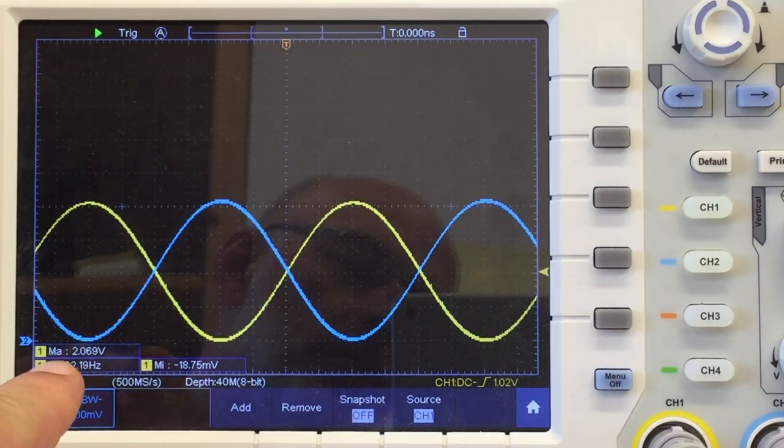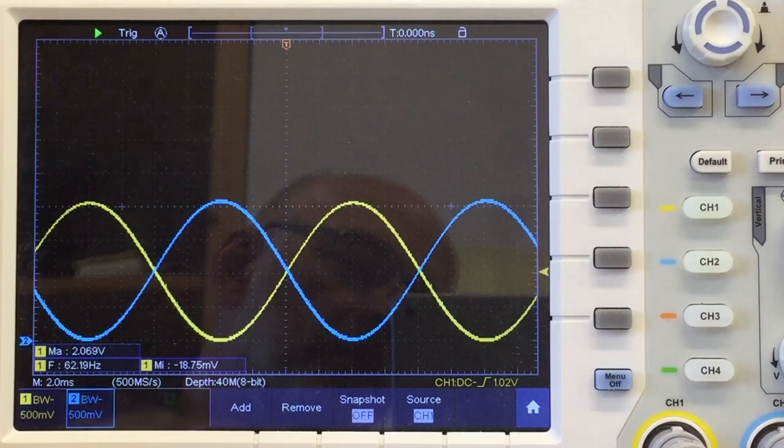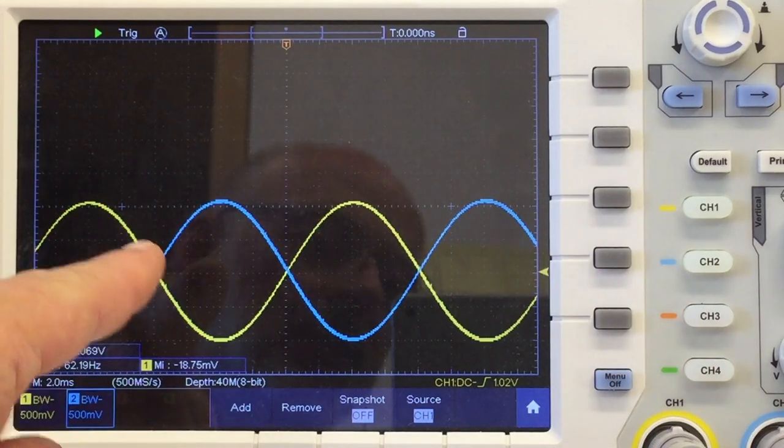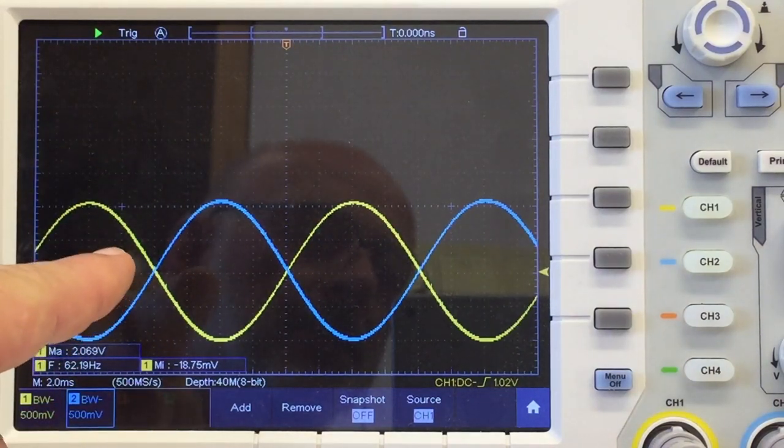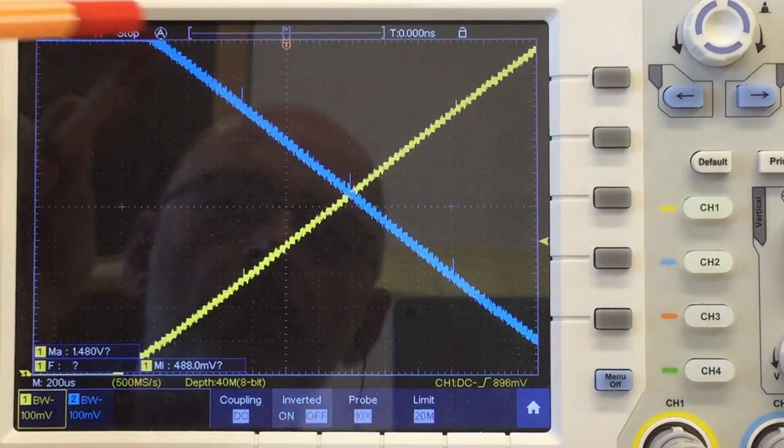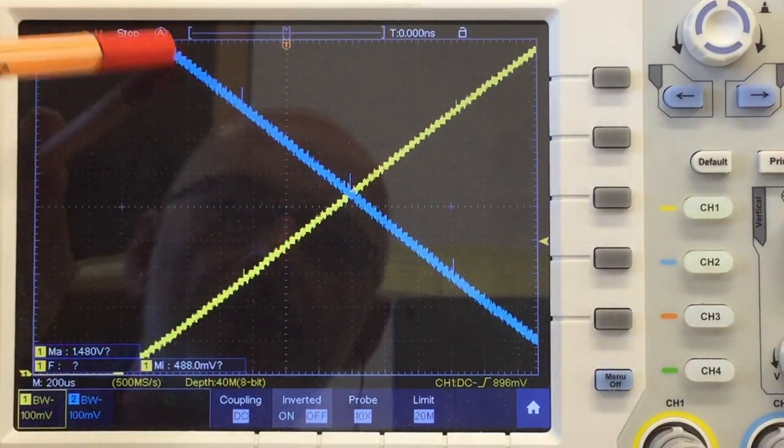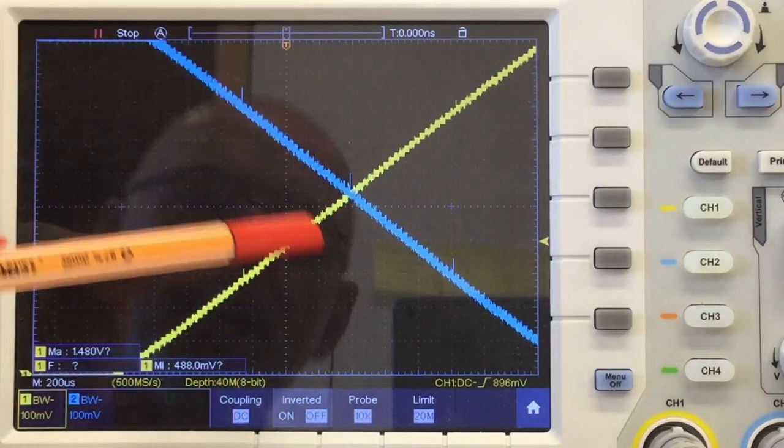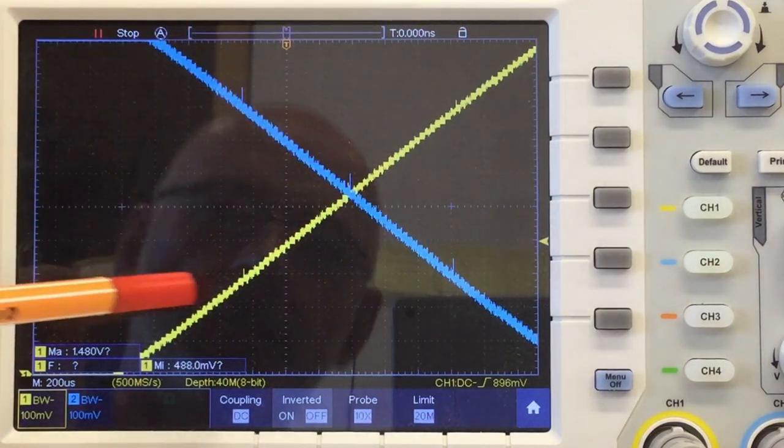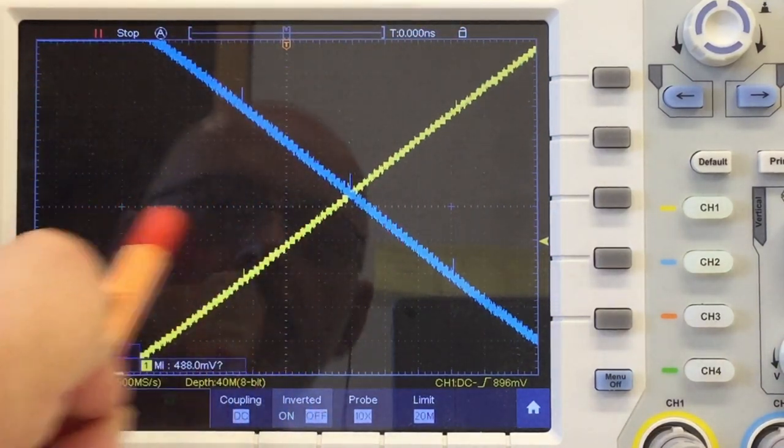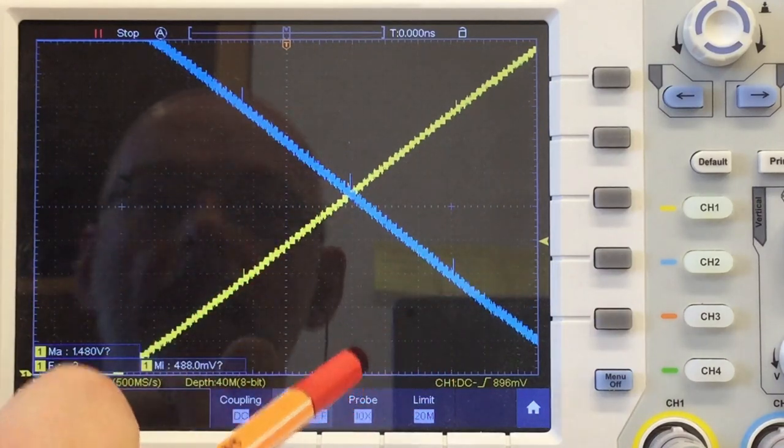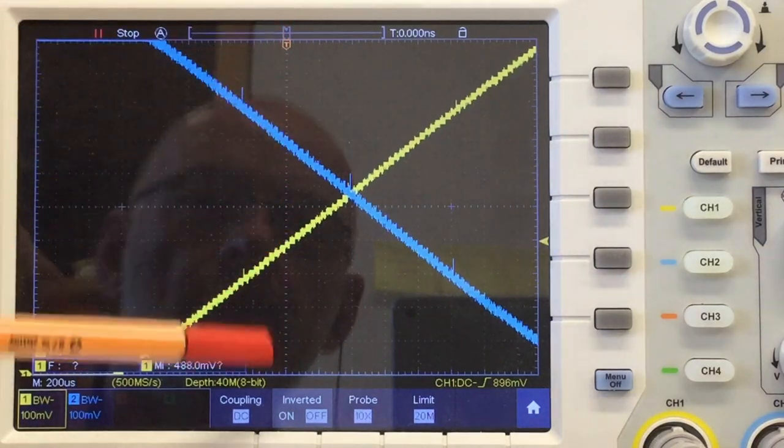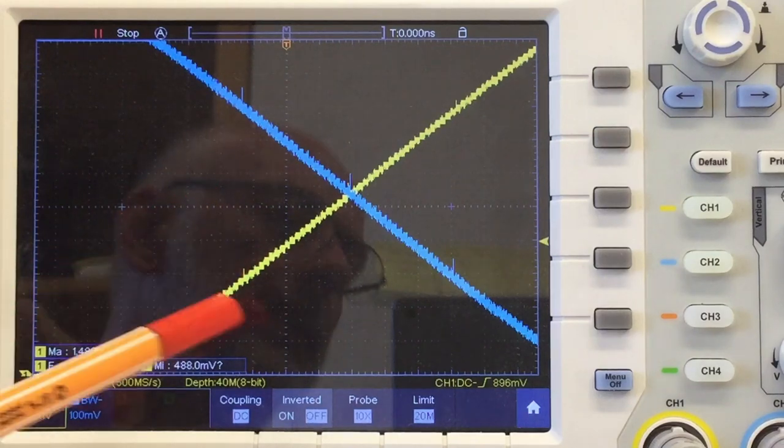Well, maximum value 2.069 volts and minimum value minus 18.75 millivolts. But hey, that's an oscilloscope, not a voltmeter. And if we zoom in really, really deep, you can see digital noise because it comes from a digital to analog converter and not from an analog oscillator.